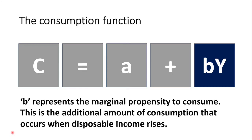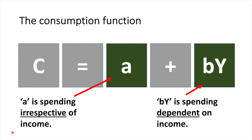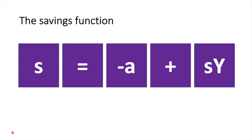To that autonomous spending we add some amount that changes as income rises. B represents the marginal propensity to consume — the additional amount of consumption that occurs when disposable income rises. Y represents disposable or after-tax income. A is spending irrespective of income, whereas BY is spending dependent on income. The savings function looks at how savings change with income and is expressed as S equals negative A plus SY.